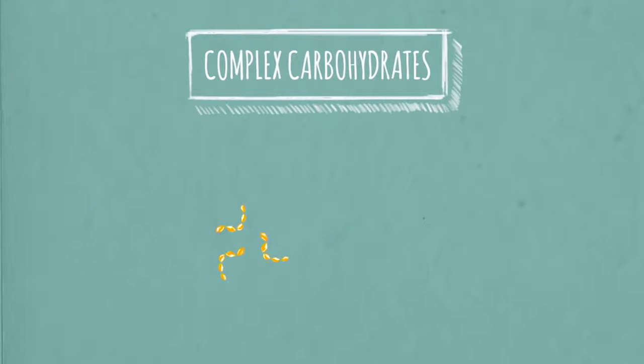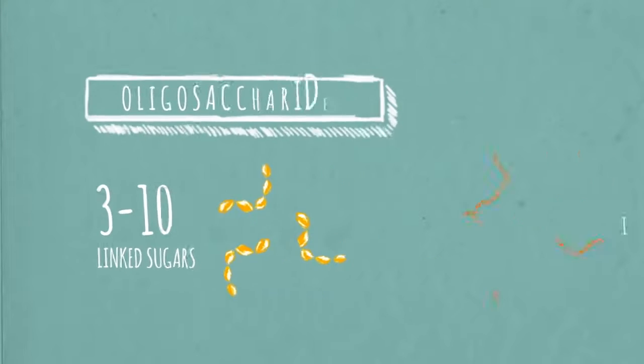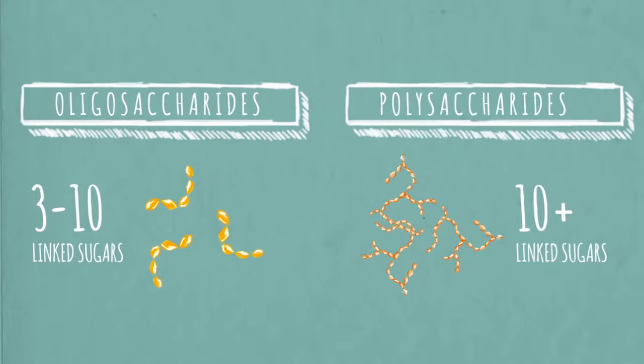Complex carbohydrates, on the other hand, have three or more simple sugars strung together. Complex carbohydrates with three to ten linked sugars are oligosaccharides. Those with more than ten are polysaccharides.